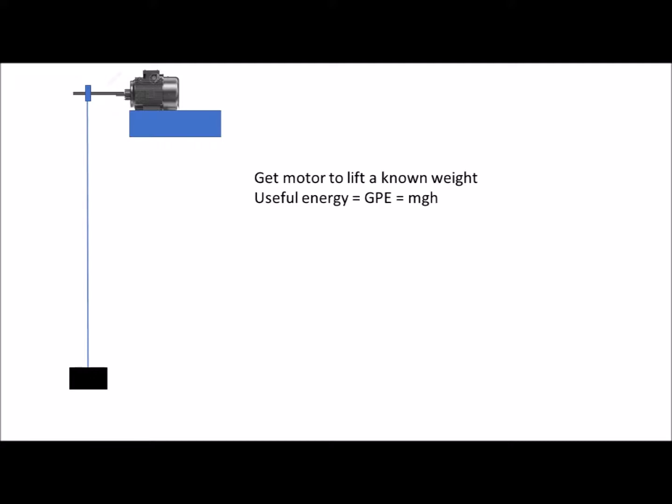The useful energy is gravitational potential energy, calculated as mass times gravity times height, or force, which is the weight, times distance, which is the height. So let's imagine we set this motor going. We're going to lift a weight a distance of 2 metres, and we're going to measure the electrical energy in. How do we do that?